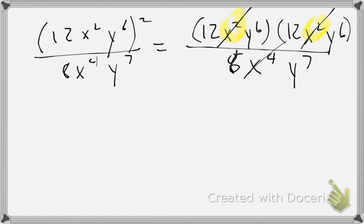Now, you have y to the 6th times y to the 6th. So the top is 144, y to the 12th, divided by y to the 7th. Therefore, my answer is going to be what?